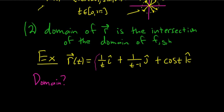So we have the vector-valued function r(t) = (1/t) î + (1/(t−1)) ĵ + cos(t) k̂. The domain is the set of all t-values we can plug in so that the expression makes sense — it's the intersection of the domains of each component, so each piece has to make sense individually.